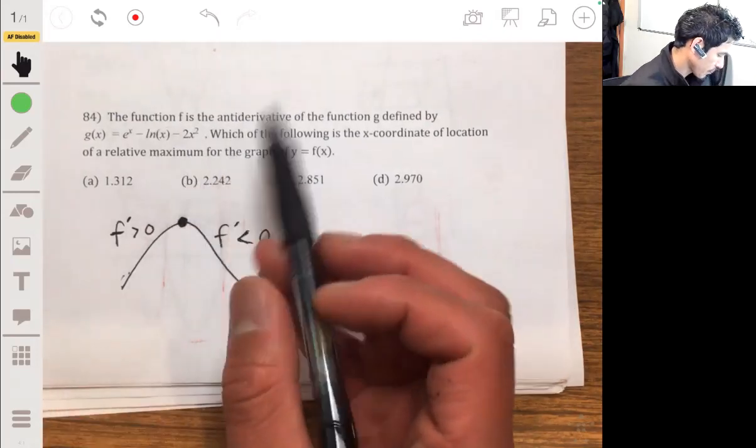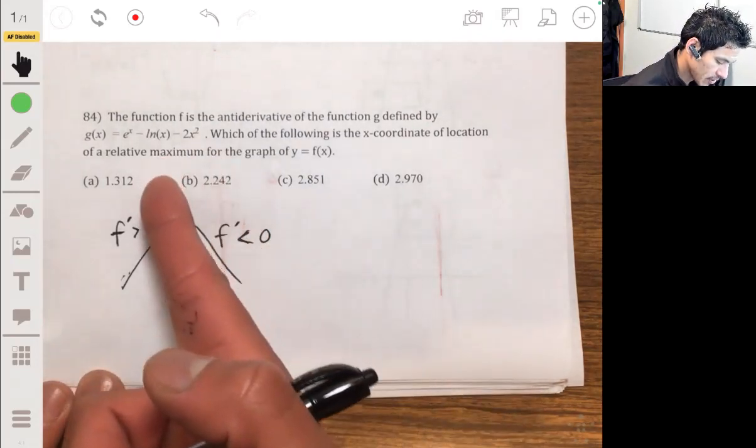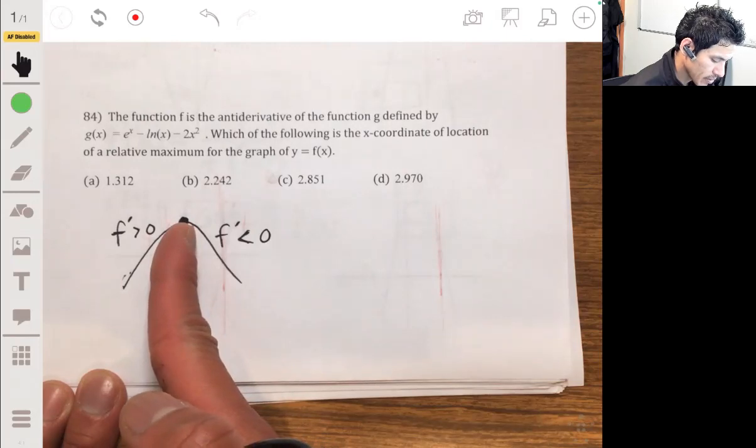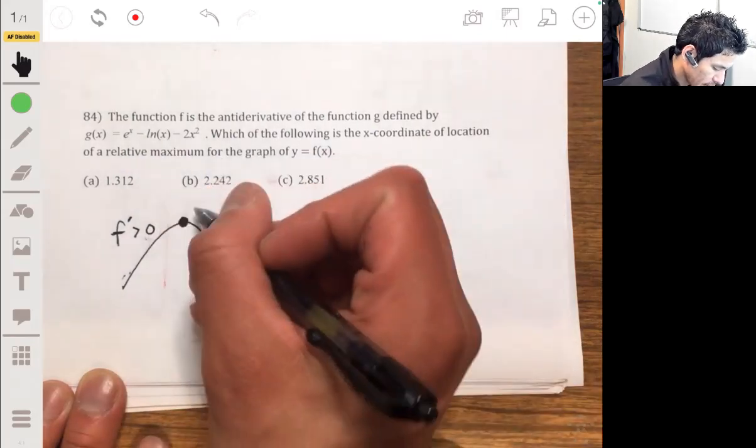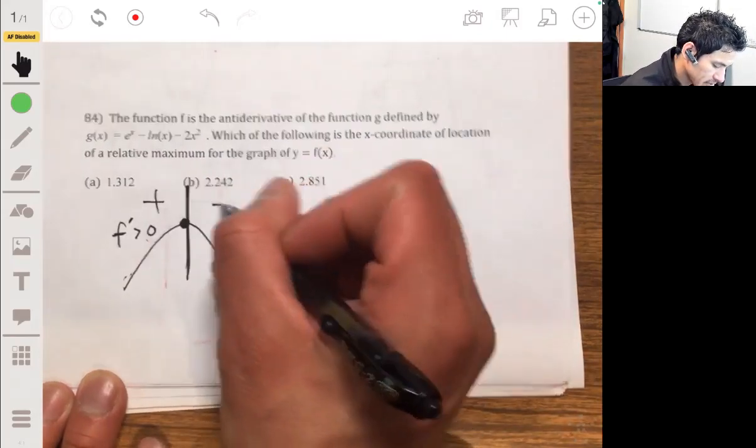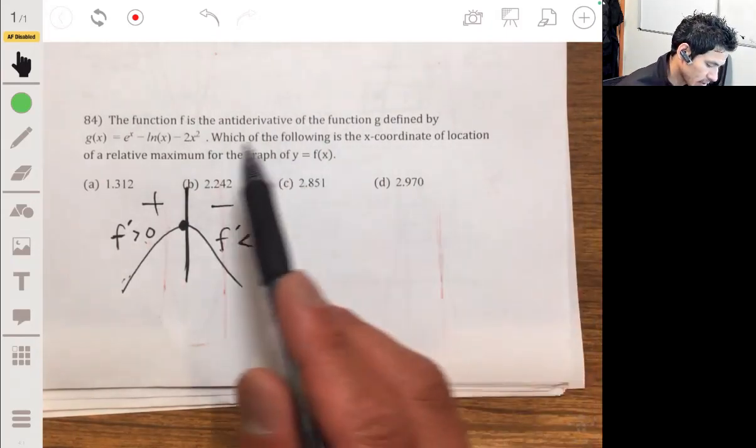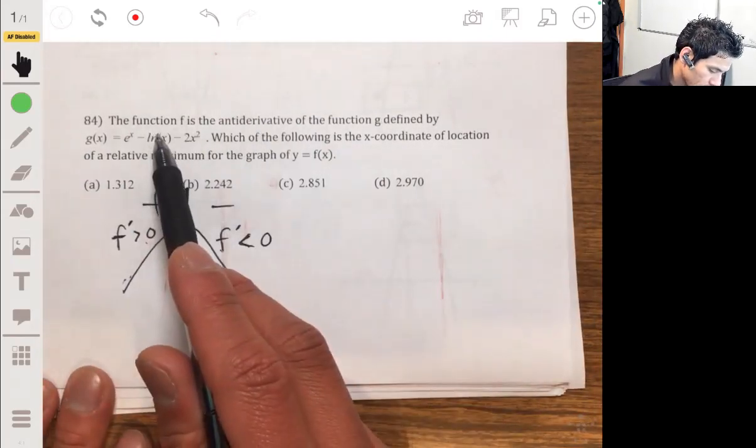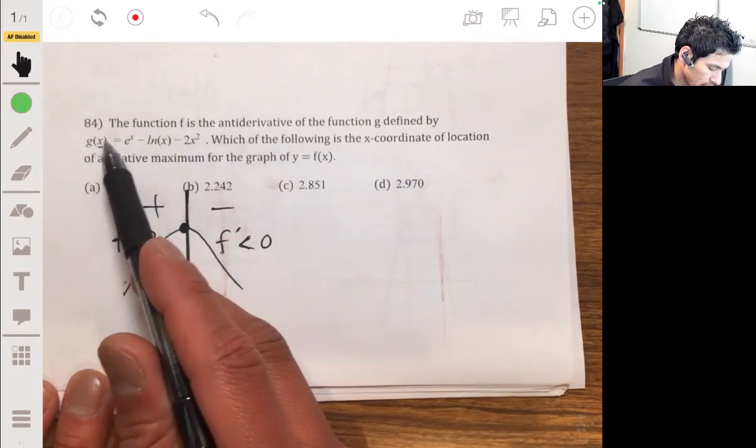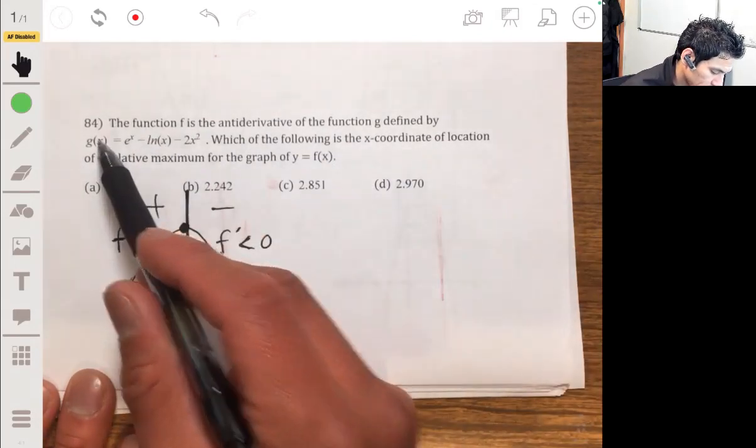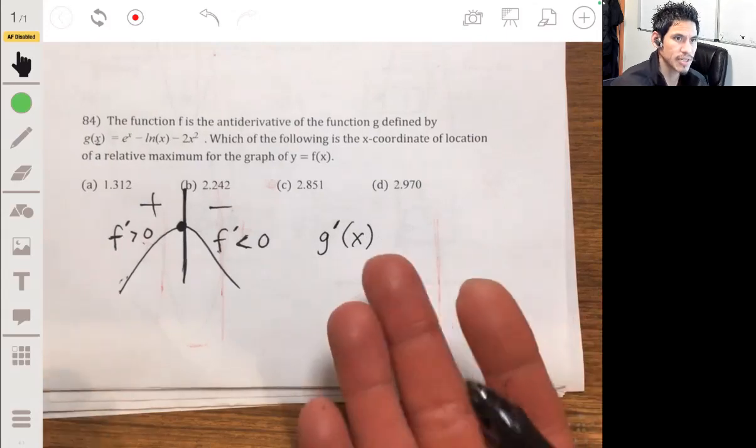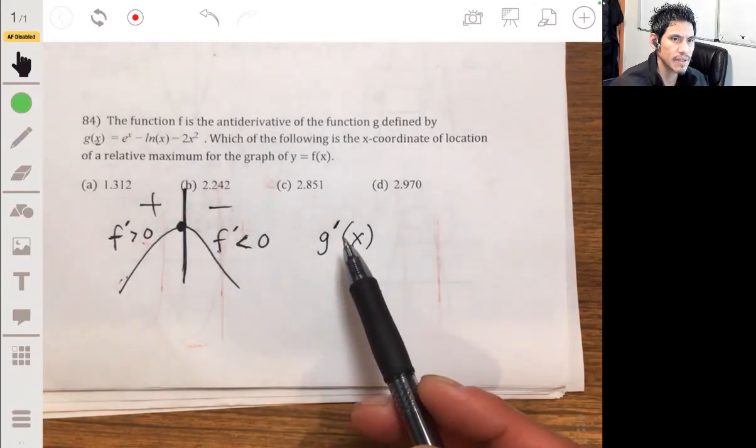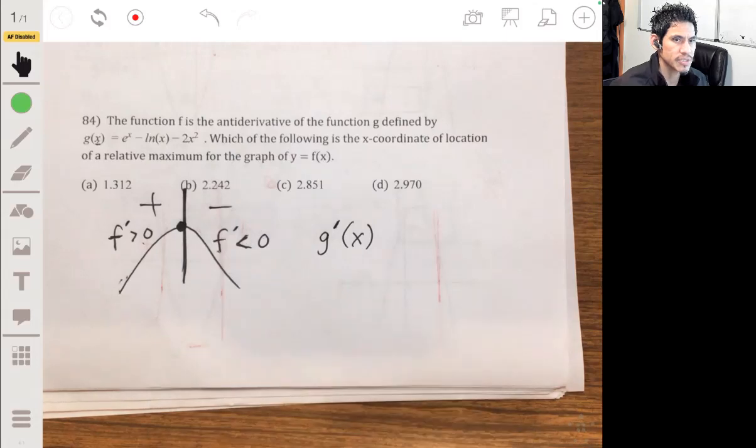So we can find where the relative maximum could be by looking where the derivative changes from positive to negative. Where, and when, what value of x is the derivative changing from positive to negative. So then we can just calculate the derivative. We find the derivative of g, so g prime of x. I mean, let's just look at a graph. Let's look at a graph of g prime of x to see where it changes from positive to negative. Let me bust out my calculator.